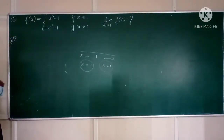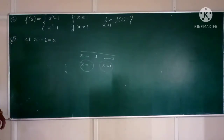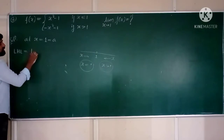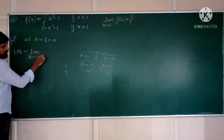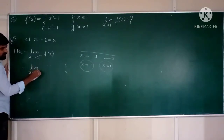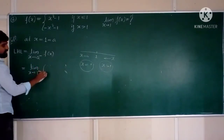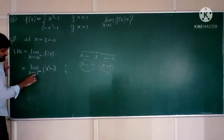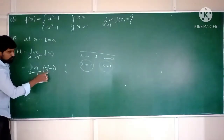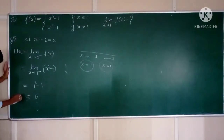We are finding the limit at x = 1, so A = 1. The definition of LHL is limit x tends to 1 minus. One minus means x is less than 1, so the definition of F(x) is x²−1. Substituting x = 1: 1²−1 = 1−1 = 0. Hence, the value of LHL is 0.